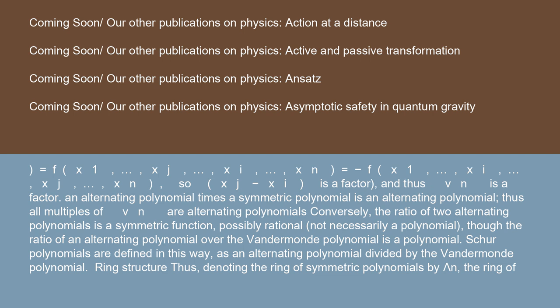An alternating polynomial times a symmetric polynomial is an alternating polynomial. Thus, all multiples of V_n are alternating polynomials. Conversely, the ratio of two alternating polynomials is a symmetric function, possibly rational, not necessarily a polynomial — though the ratio of an alternating polynomial over the Vandermonde polynomial is a polynomial. Polynomials are defined in this way, as an alternating polynomial divided by the Vandermonde polynomial.